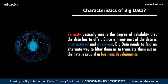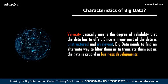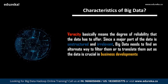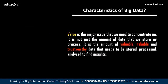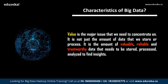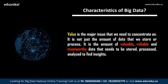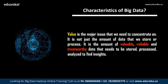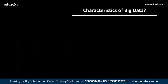Followed by variety, we shall enter veracity. Veracity basically means the degree of reliability that the data has to offer. Since the major part of the data is unstructured and irrelevant, big data needs to find an alternate way to filter or translate that data to make it crucial for business developments. Followed by veracity, we shall enter into value. Value is the major issue we need to concentrate on — it is not just the amount of data we store or process, but the amount of valuable, reliable and trustworthy data that needs to be stored, processed, and analyzed to find insights.